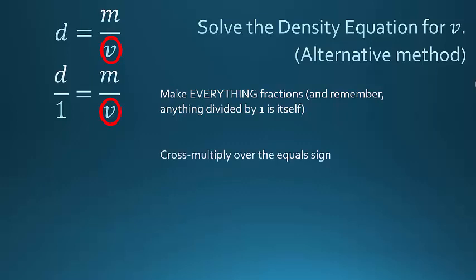Now what I'm going to do is cross multiply over the equal sign. So I'm going to have D times V equals M times 1. Let me do that again. D times V equals M times 1. M times 1 is just M. And again, I've got DV equals M.